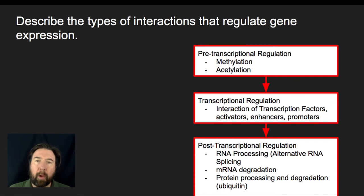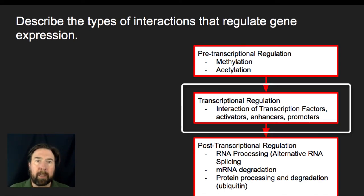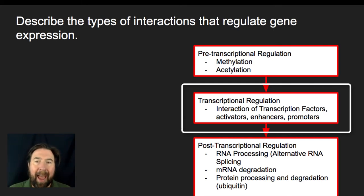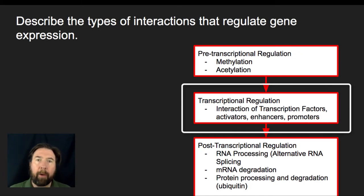Then there are regulations that can happen during transcription. These could be interactions of transcription factors, activators, enhancers, and promoters — things that actually have an influence on how rapidly, how often, or even whether or not transcription occurs in general.